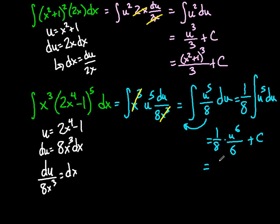And then just simplify. So, it'll be 1 over 48 times u to the sixth plus c. And, again, we don't want to keep it in terms of u. So, let's use what our u was and plug back in. So, 1 over 48 times 2x to the fourth minus 1 all to the sixth power plus c.